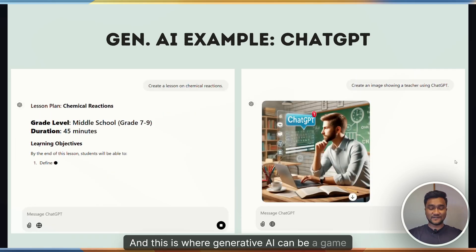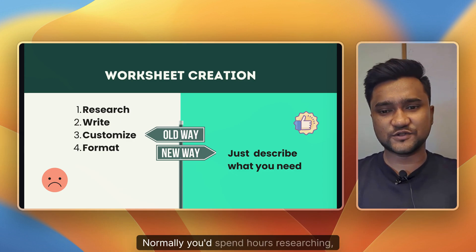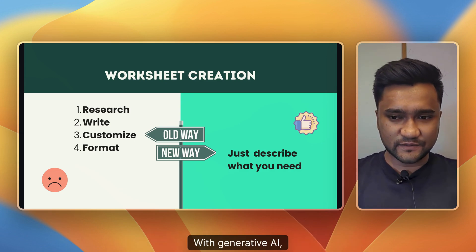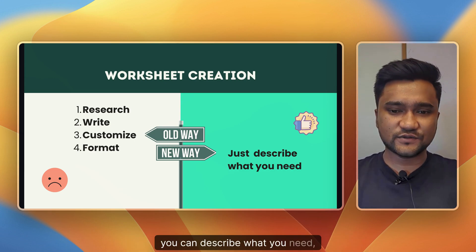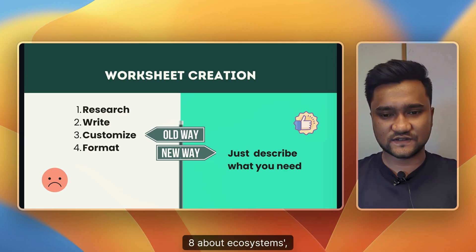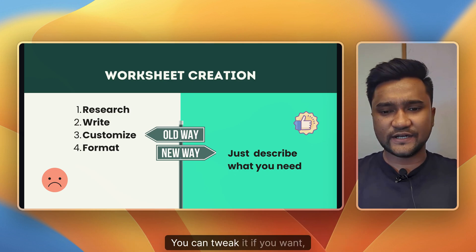Think about creating a worksheet for your class. Normally you spend hours researching, writing questions, and formatting the whole thing. With generative AI, you can describe what you need—like 'a reading comprehension worksheet for grade 8 about ecosystems'—and it will generate a ready-to-use resource. You can tweak it if you want, but the hard part is already done.